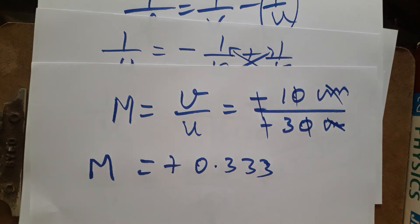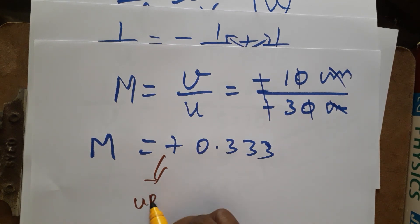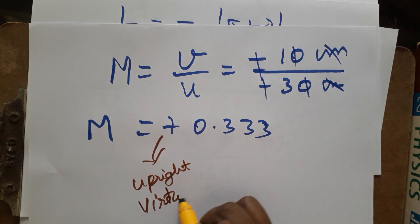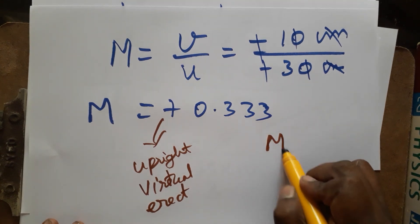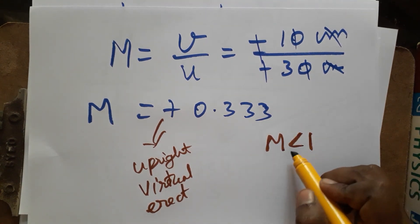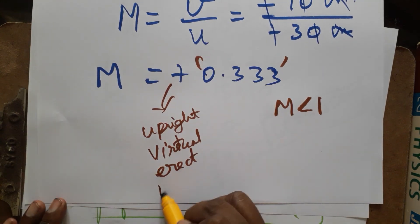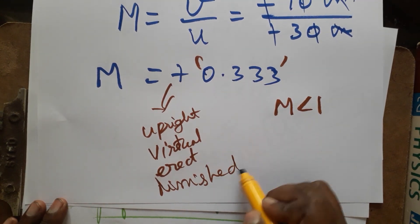As I mentioned earlier, the image is upright, virtual, erect, and diminished. A positive magnification indicates an upright and virtual erect image. Since the magnification value of 0.333 is less than 1, the image is diminished. Thank you for watching — if you like my channel, please subscribe.